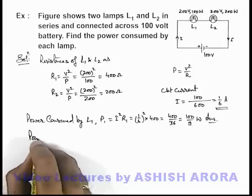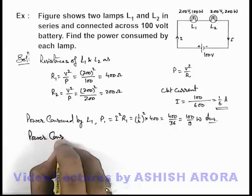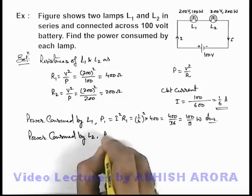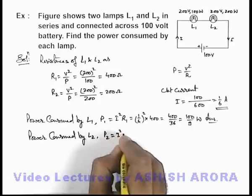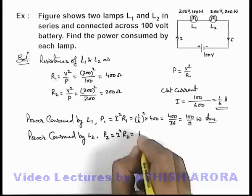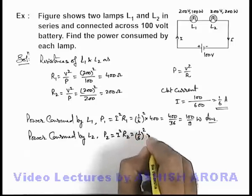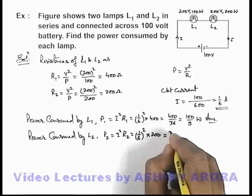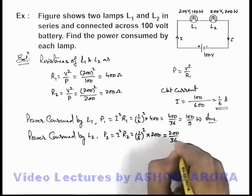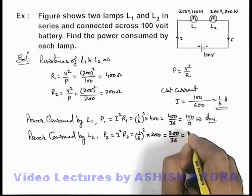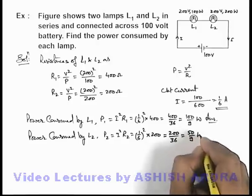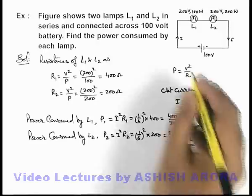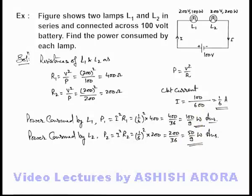Similarly, we can calculate the power consumed by L2. That'll be P2, which can be written as I squared R2. So this can be now written as 1 by 6 squared multiplied by the resistance of the second lamp, that is 200. So this is 200 by 36, that'll be 50 by 9 watt. That is another answer to this problem. So these are the power consumed by the two lamps in the problem which is asked.